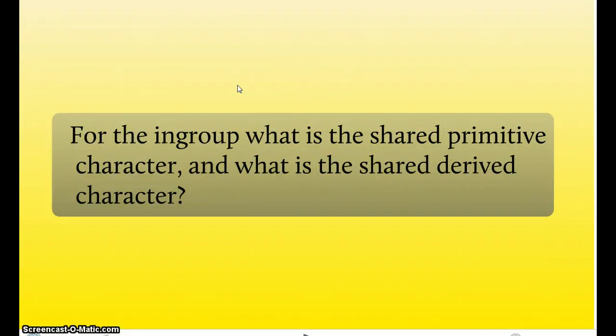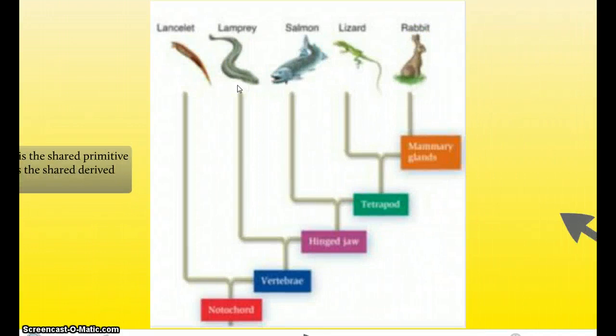So, for the ingroup, what is the shared primitive character, and what is the shared derived character? Well, we just talked about that the salmon, lizard, and rabbit are the ingroup. And, we said that a shared derived character of the three would be the hinged jaw. But, a shared primitive character would be a notochord and a vertebrae. And, that is because their ancestors, the lancelet, has the notochord and the vertebrae. So, the lancelet is their ancestor. The lamprey is the outgroup, because it diverged during evolution, before it could attain the hinged jaw. And, the salmon, lizard, and rabbit are the ingroup.